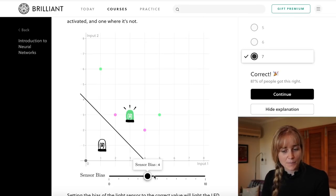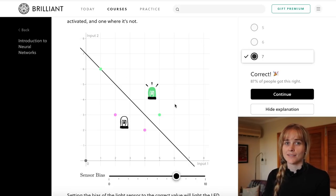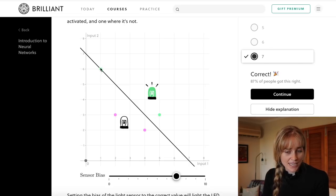If we set our bias to seven then we are able to separate the inputs into what we want. We want these two green inputs to be able to activate the LED—that's when the robot wants to quit—and we want these pink ones to not activate the LED, so that looks good.